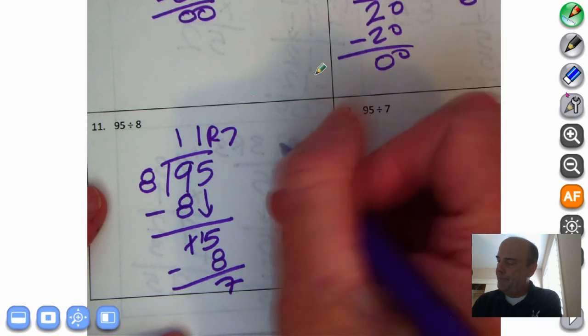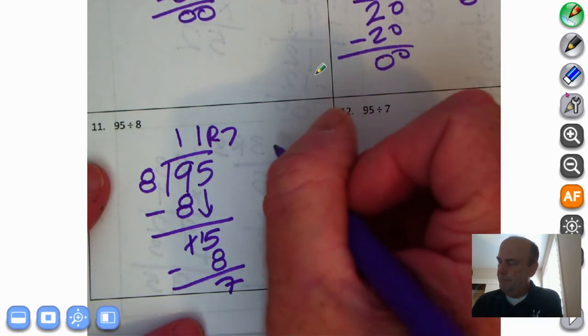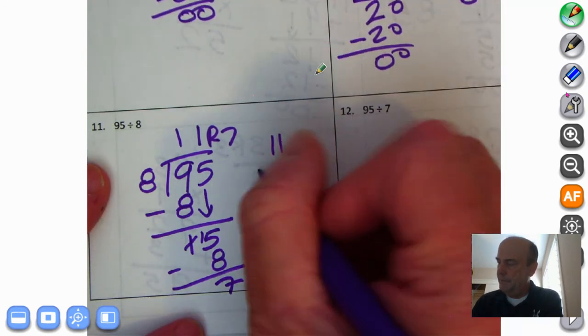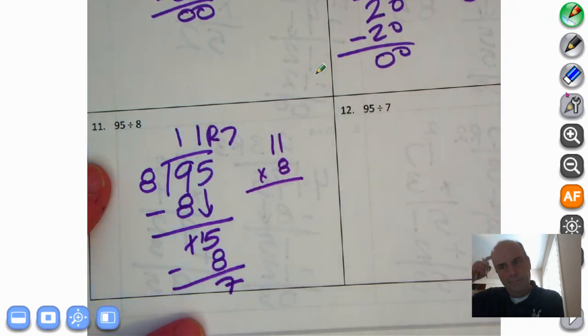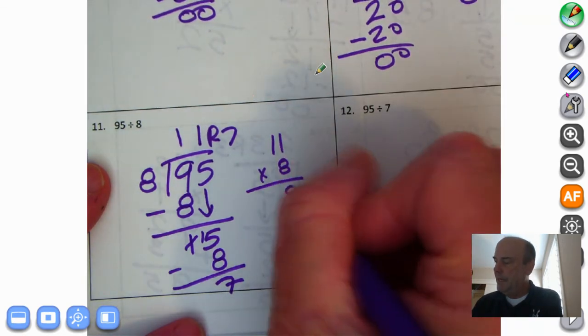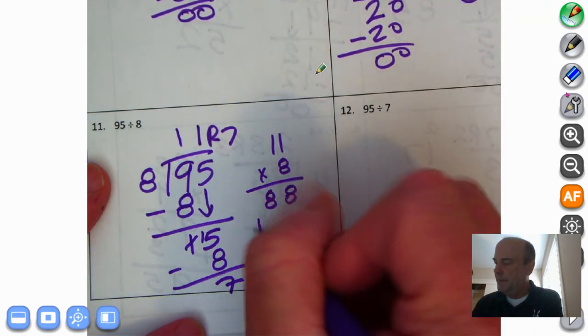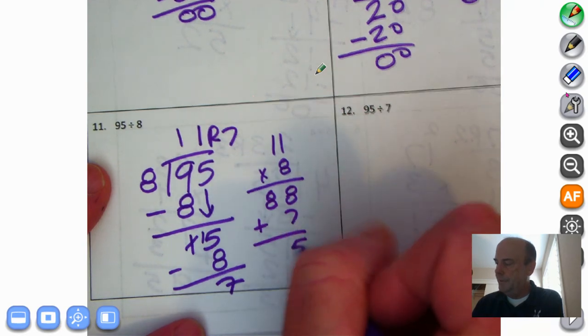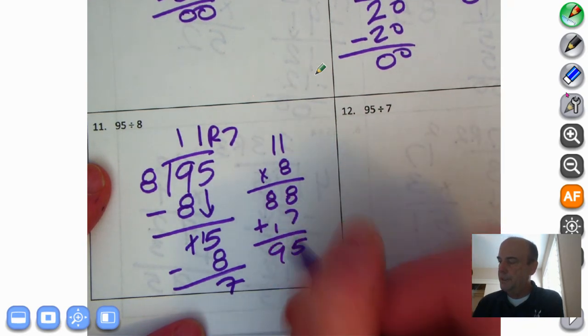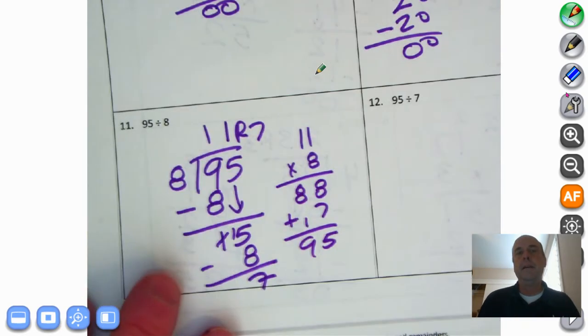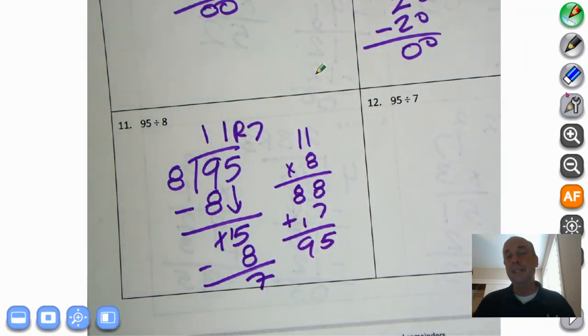Let's just take a look at what we get. We can do our multiplication. 11 times 8. This is why I'm saying we could have done it up here. 1 times 8 is 8. 1 times 8 is 8. We're going to add the 7 on. 8 plus 7 is 15. And 8 plus 1 is 9. And sure enough, 95. I'm saying we could have done it mentally because we could have gone, oh, yeah, well, 8 times 11 is 88. 7 more than 95. 11 remainder 7.